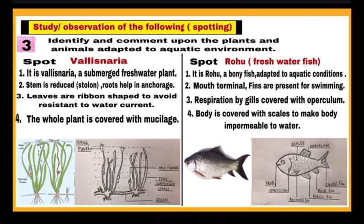Next spot in this category is a fish — Rohu, which is a freshwater fish. It can be shown to you as a model or chart form. After identification, write: point one, it is Rohu, a bony fish adapted to aquatic conditions. Point two: the mouth position is terminal and fins are present which help in swimming. Respiration is via gills which are covered with operculum, and body is covered with scales to make the body impermeable to water. After writing these four points, draw the diagram as shown in the figure and label the important parts.